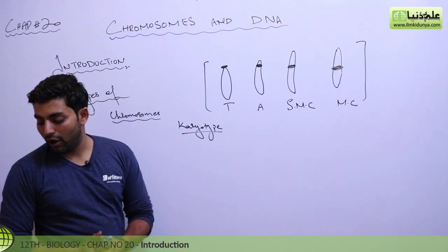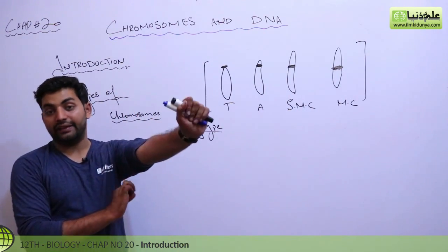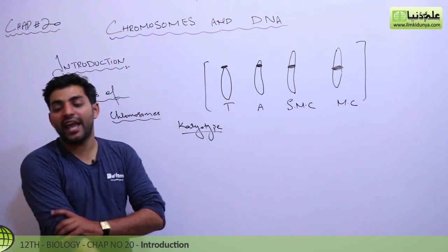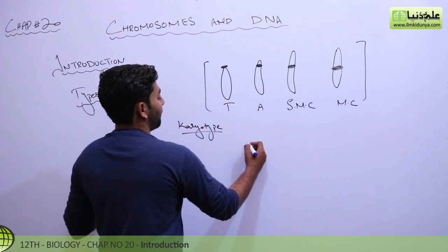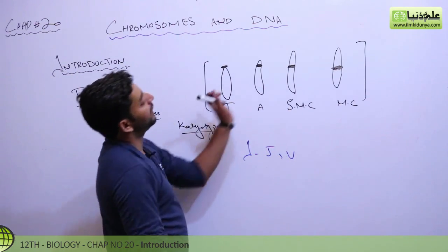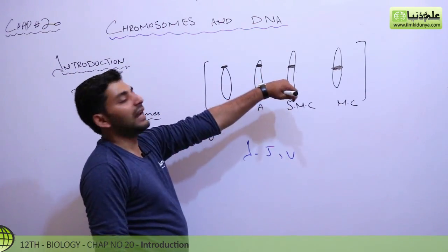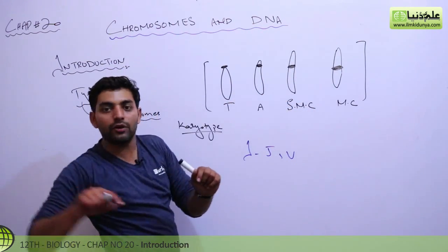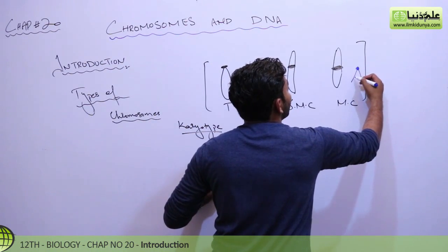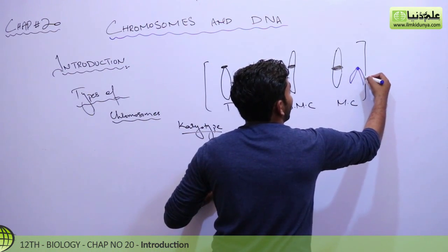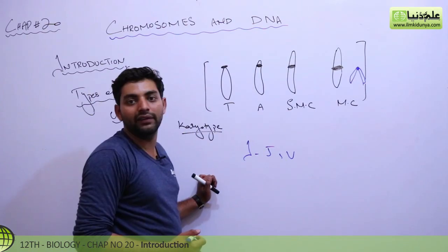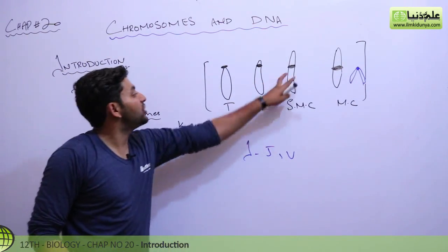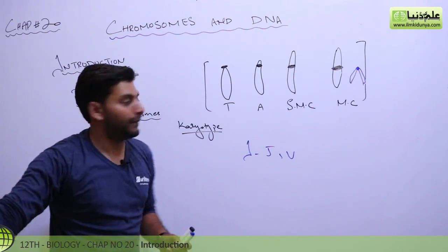In metaphase you can see these different chromosome types clearly. The centromere can be in the center or at the edge. This way, chromosomes get their different naming.